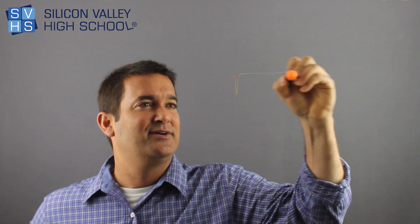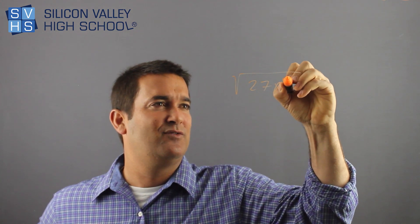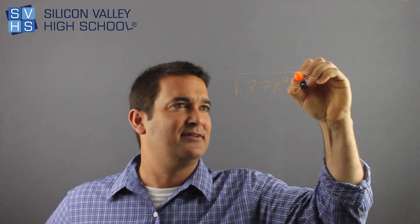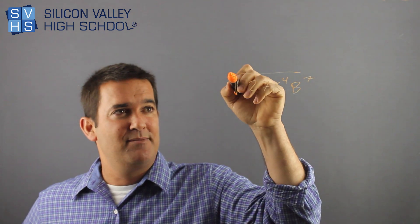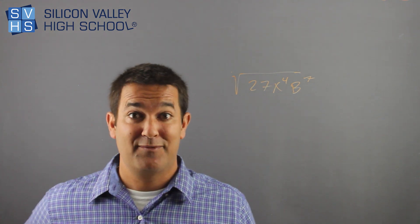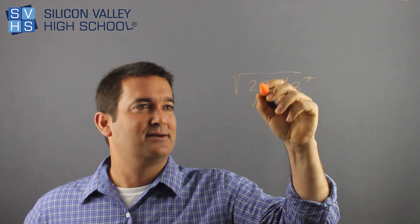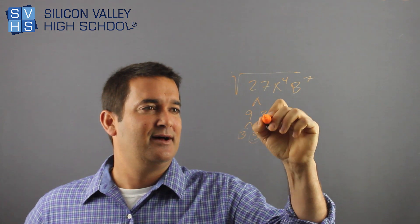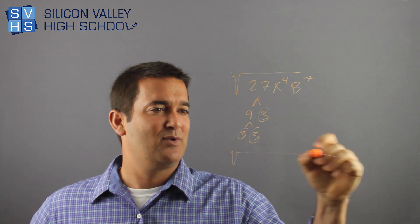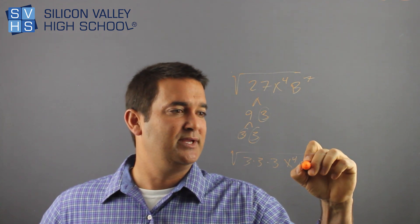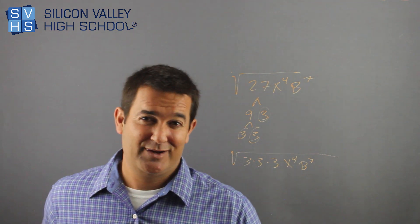So let's say I had square root of 27X to the fourth, I don't know, B to the seventh, right? There's no number here. So it's not cube root. It's not fourth root. If there's no number, it's square root. Okay. So let's break this sucker down. That's nine times three. And this is three times three. Okay. Done. So I have the square root of three times three times three, X to the fourth, B to the seventh.